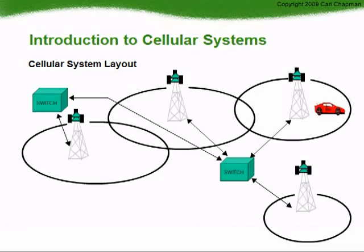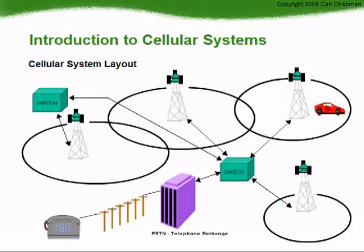For a cellular-to-cellular call, the call is originated at the mobile. The signal is sent to the strongest cell site and passed to the switch, which then transfers the signal to the cell site with the receiving mobile. The switch from the cellular company is also connected to the landline telephone company PSTN through a gateway. For a cellular-to-landline call, the signal is sent to the strongest cell site and passed to the switch, which then transfers the signal to the PSTN exchange and onto the land telephone.